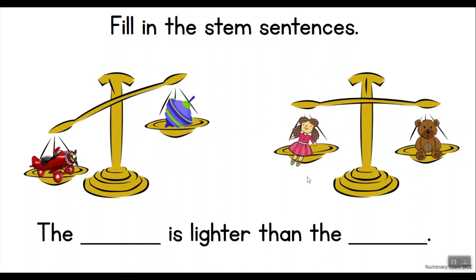Now, from the first stem sentence, we know that the plane is heavier than the top. So that means that the top must be lighter than the plane, correct? We know that because we can see that the pan holding the top went up.